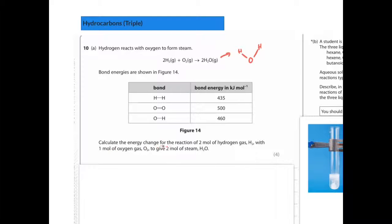Calculate the energy change for the reaction of 2 moles of hydrogen gas, H2, with 1 mole of oxygen gas, in other words this chemical reaction, to give 2 moles of steam. So what is the energy change? So you've got to work out the energy contained in the bonds on this side against the energy in the bonds on this side.